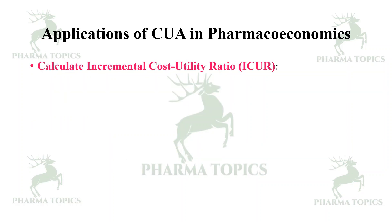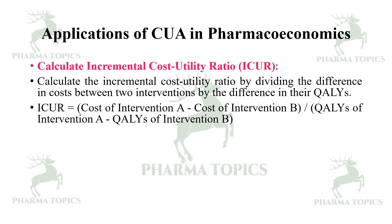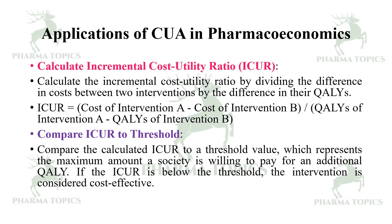Then calculate the ICUR — the incremental cost utility ratio — by dividing the difference in cost between two interventions by the difference in their QALYs: ICUR = (Cost of Intervention A − Cost of Intervention B) / (QALYs of Intervention A − QALYs of Intervention B). Compare the calculated ICUR to a threshold value — here we use the term ICUR rather than ICER.